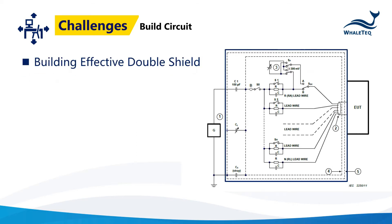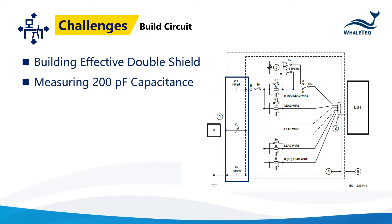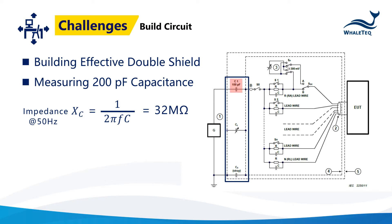Challenge 1: Because the test setup is very sensitive to external noise, a double shield is required by the standard. Setting up an effective double shield to control noise is critical to running consistent tests. Challenge 2: The standard also requires you to set up 200 pF equivalent capacitors to simulate the capacitance from the human body. But due to the high impedance of the 100 pF divider, measuring and adjusting the stray capacitor here is very difficult.